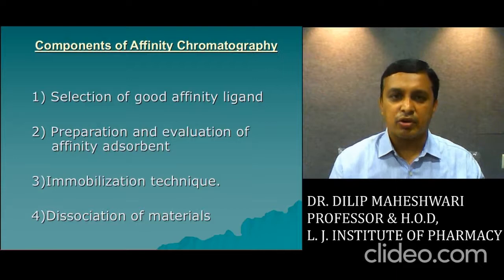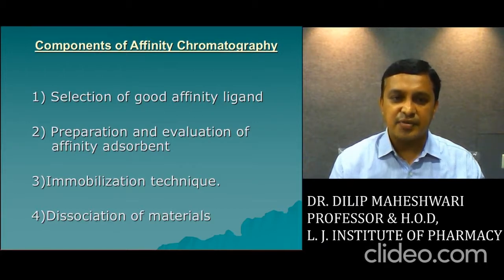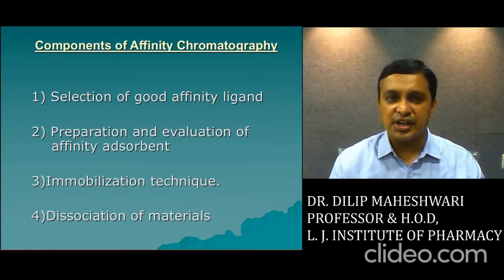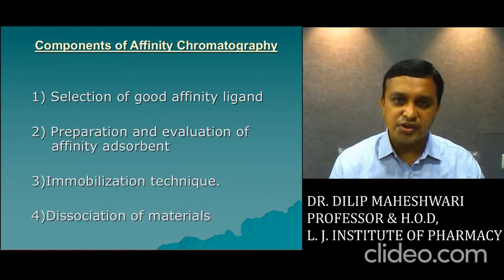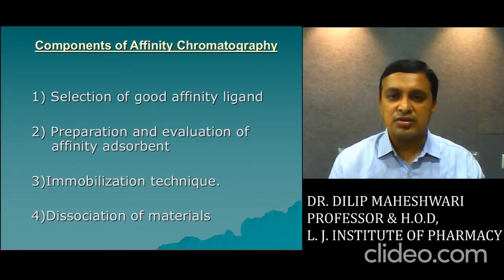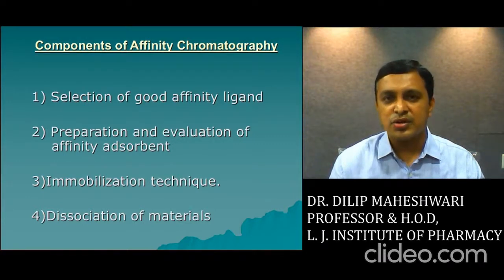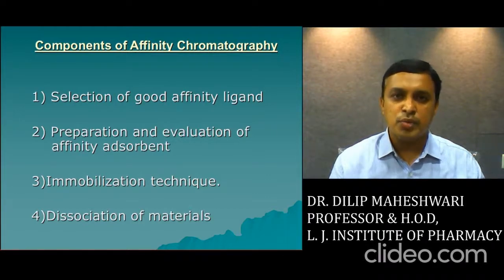The steps, methodology, and components of affinity chromatography are: first, selection of good affinity ligands; second, preparation and evaluation of affinity adsorbent; third, immobilization technique; and fourth, dissociation of material. The first step — selection of good affinity ligands — is critical because the total separation and purification depends on which type of affinity ligands you use. They should be very specific and targeted to your compound of interest. There are two types of affinity ligands: mono-specific affinity ligands and group-specific affinity ligands.